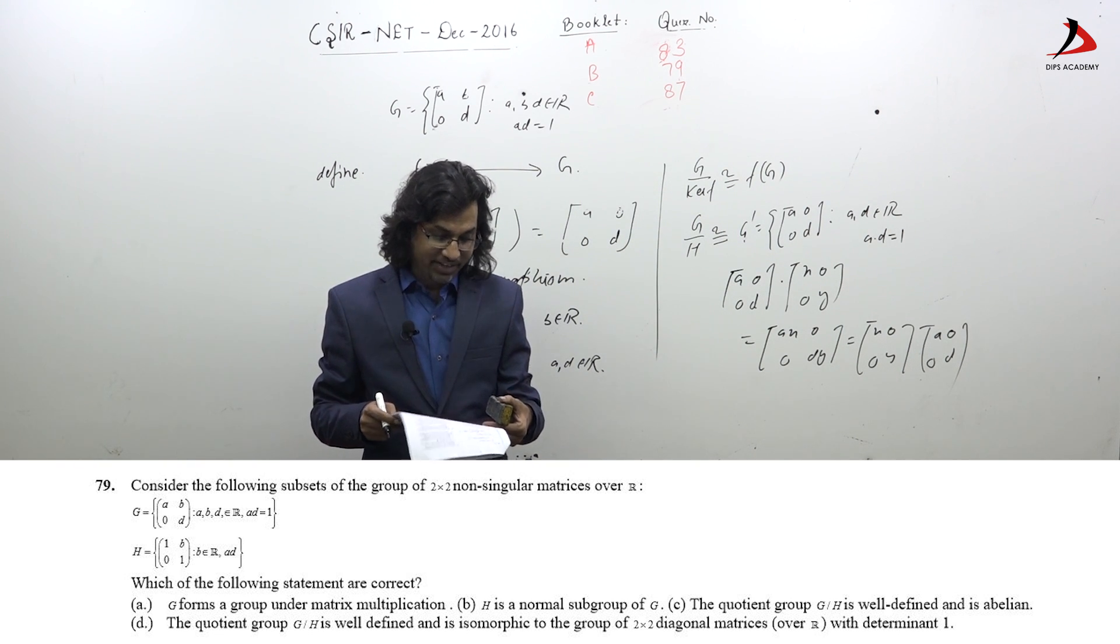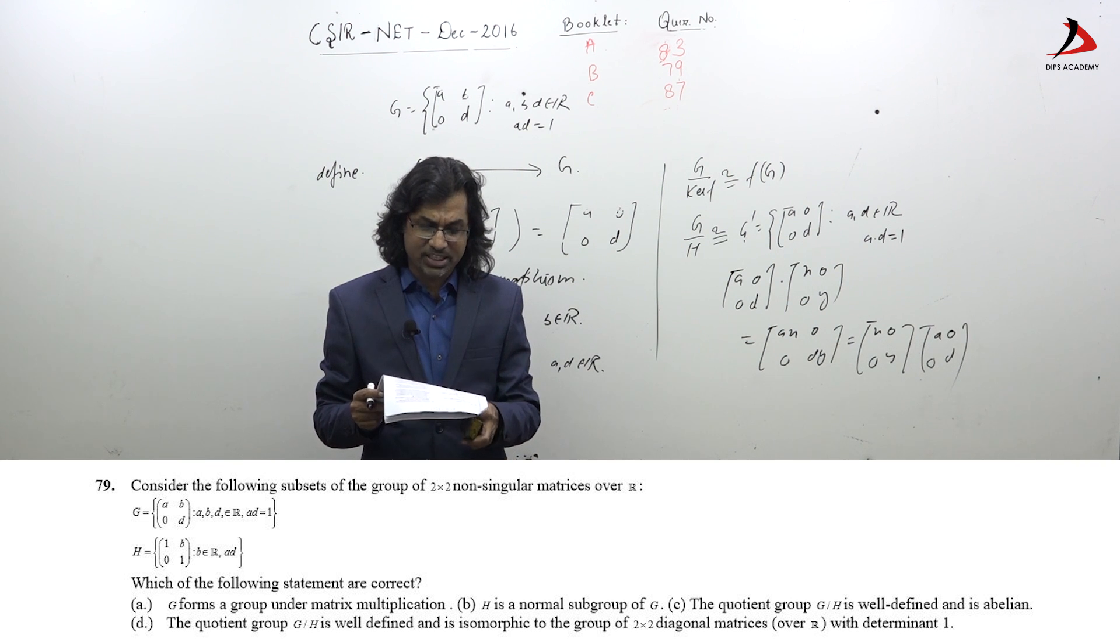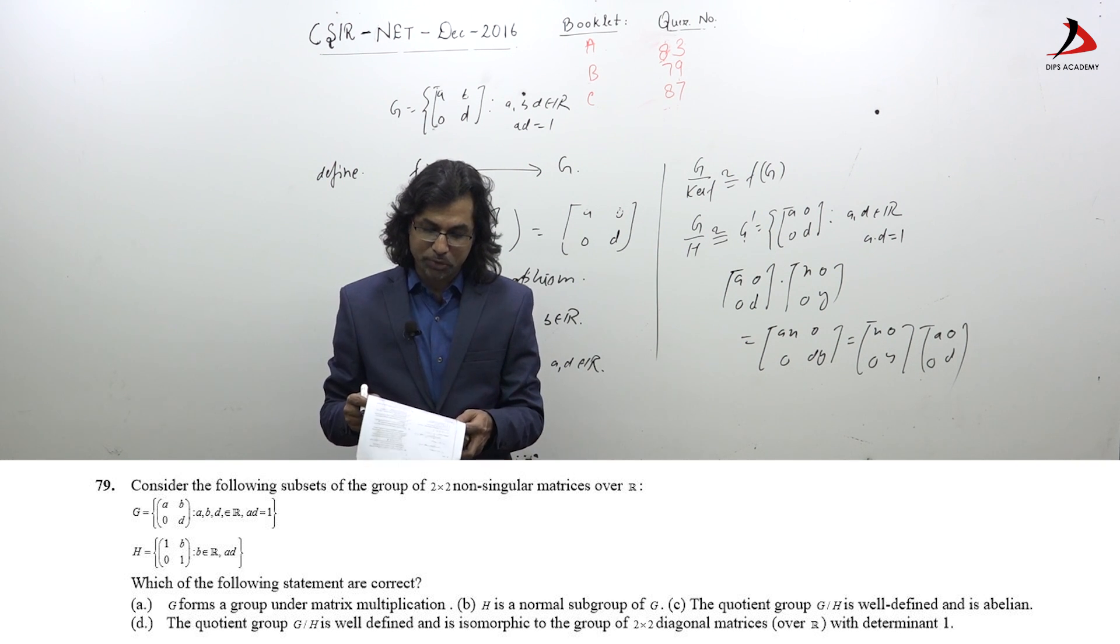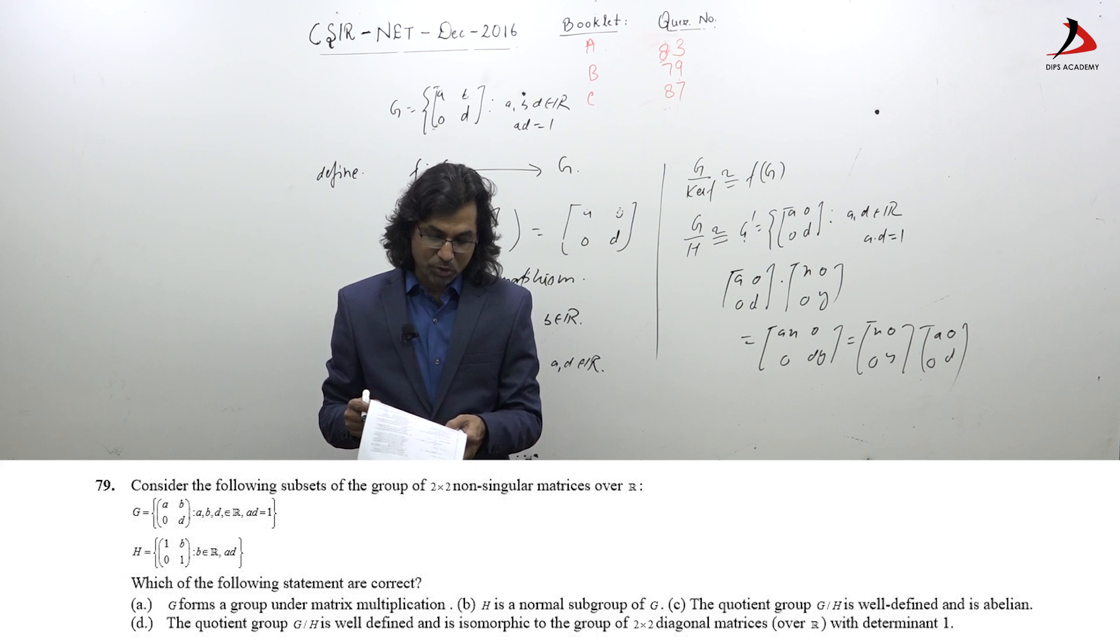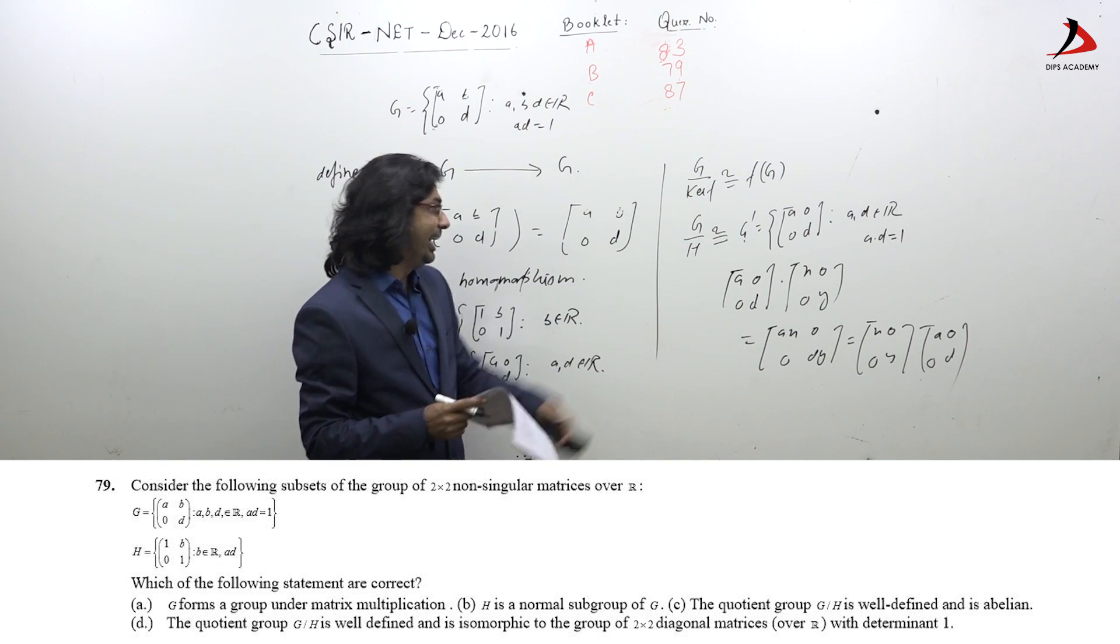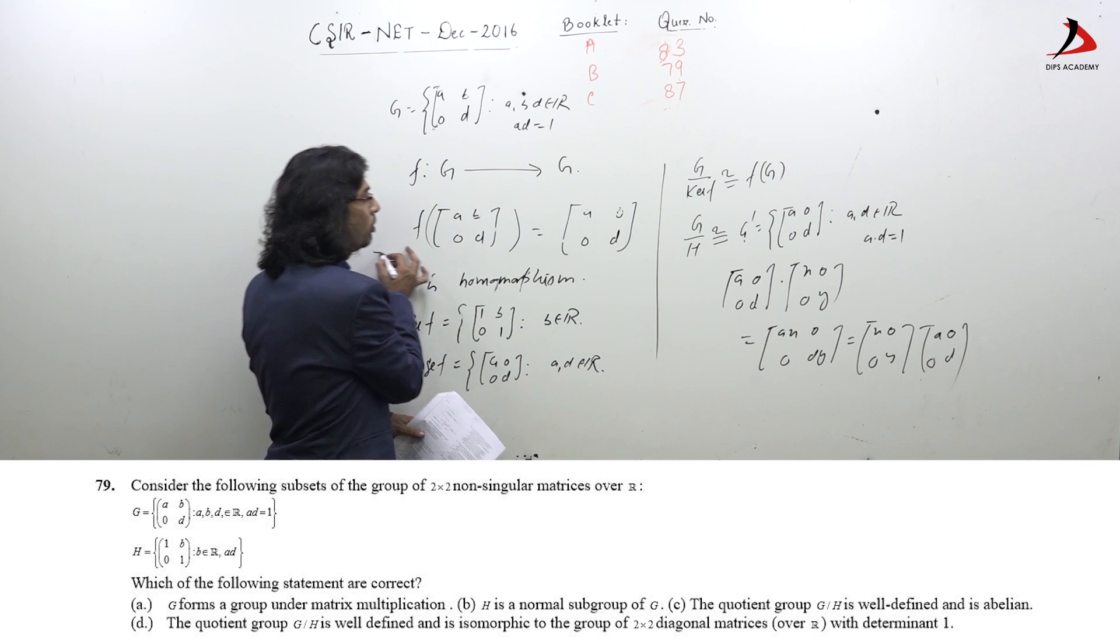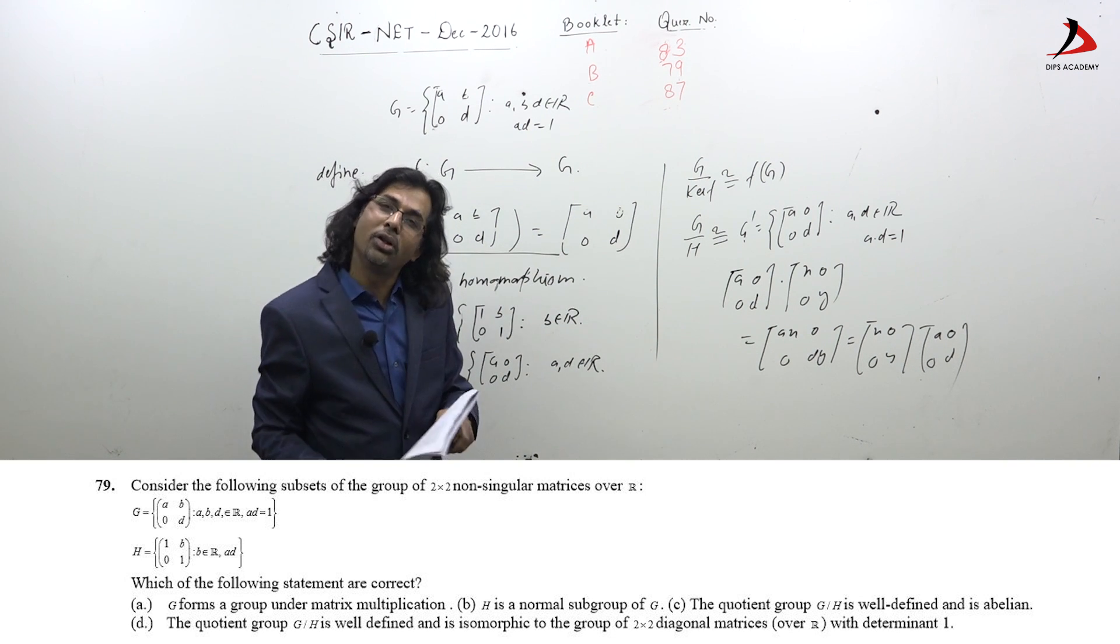The quotient group G/H is well-defined and is abelian, and third, the quotient group G/H is well-defined and is isomorphic to the group of 2×2 diagonal matrices over R with determinant 1. You can see easily this single homomorphism gives you all the possibilities.